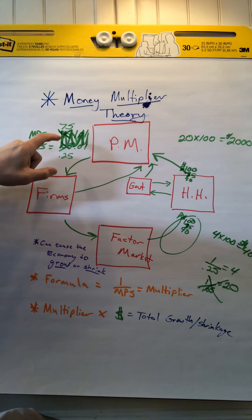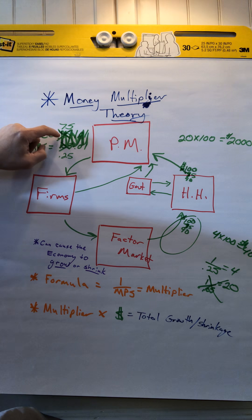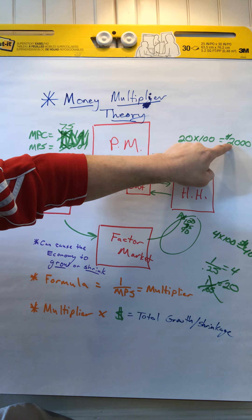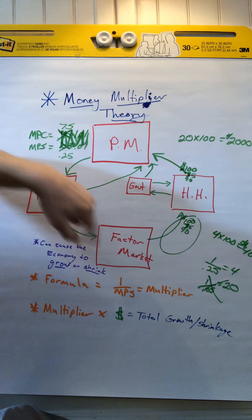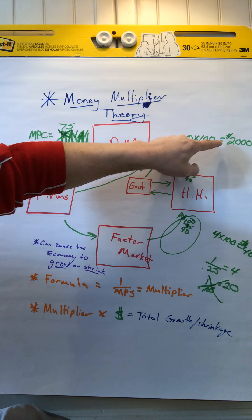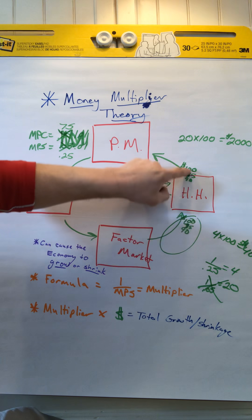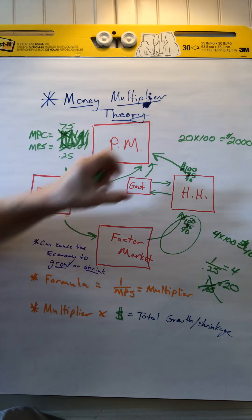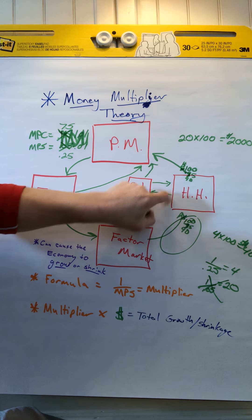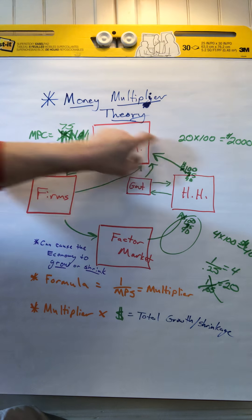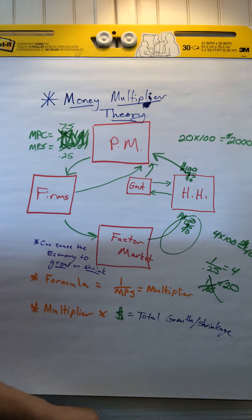You can see the higher the MPC, like the United States 0.95, the economy can grow faster because more money's being circulated and more money's being spent back in the economy rather than saved. But someone like Japan or China or somebody that has a higher savings rate, their economy's not going to grow as fast when the money gets spent. That's why it's so important for households, the government, and firms to continually spend money in our economy to help our economy grow.